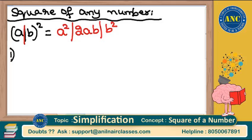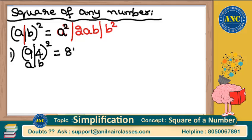Let me give 2 to 3 examples for you to understand much better. Suppose I want to find 94². Split it as a and b — a is 9, b is 4. Substitute: a² is 9² = 81. 2ab is 2 × 9 × 4 = 72. b² is 4² = 16. So I got 81, 72, 16.